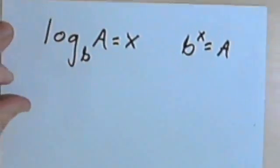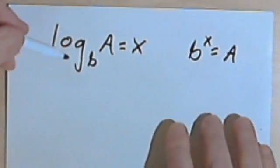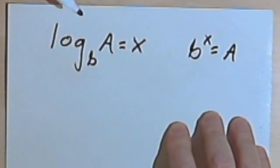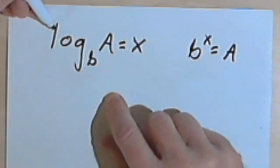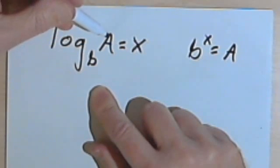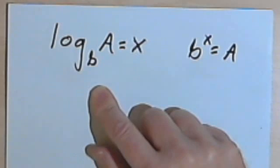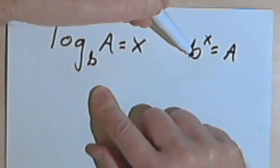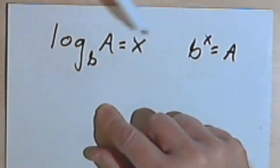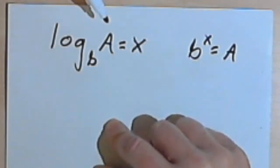What I've got here is that conversion formula that we've done before. So we can remember that if I have a logarithm, like log base b of A equals x, I can convert that to b to the x power equals A. And we're going to use that formula for just about every one of these problems.